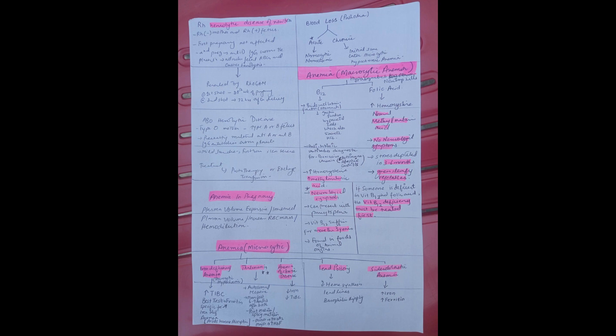If we talk about folic acid, in contrast to vitamin B12, the methylmalonic acid is normal and there is no neurological symptoms. Stores are depleted in months, that is 3 to 6 months, and they are present in green leafy vegetables.